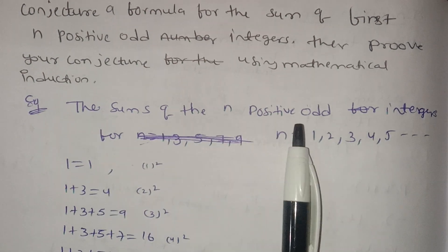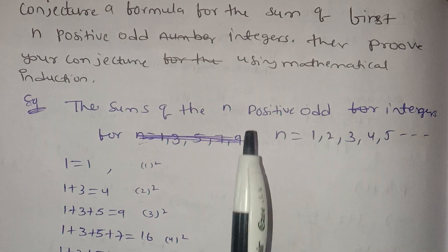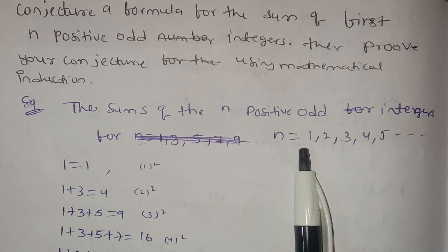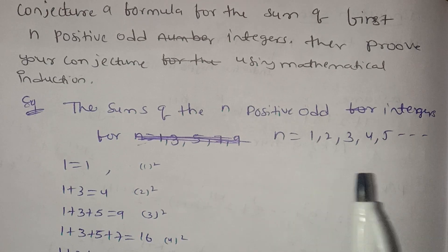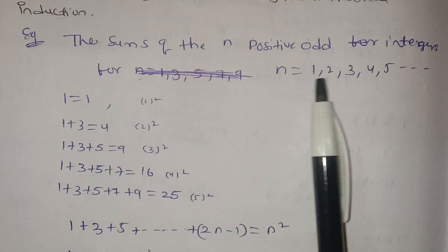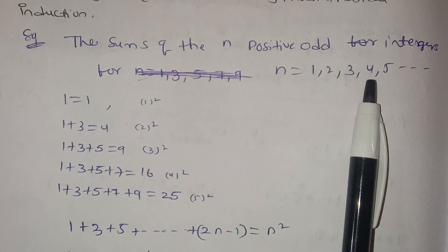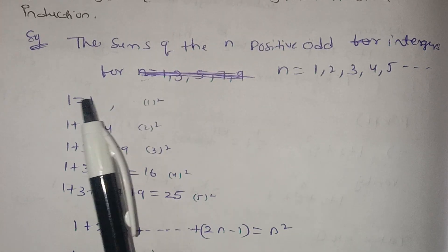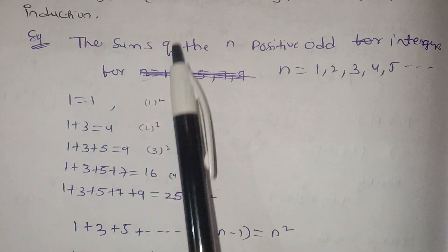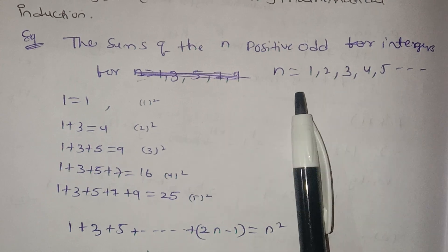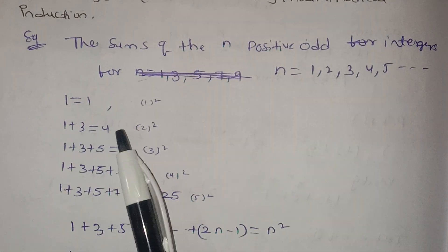The sum of n positive odd integers. N equals 1, 2, 3, 4, 5 — positive integers, but now we need odd integers. The odd numbers are 1, 3, 5... So for n=1, the sum is 1, and 1 equals 1.